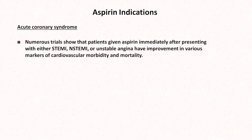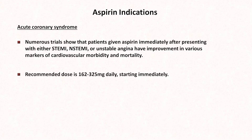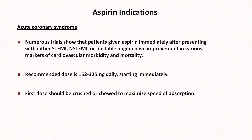So what are aspirin's indications? There are many. The clearest indication is acute coronary syndrome. Numerous trials show that patients given aspirin immediately after presenting with either an ST-elevation MI, non-ST-elevation MI, or unstable angina have improvement in various markers of cardiovascular morbidity and mortality. The recommended dose is 162 to 325 mg daily, starting immediately. The first dose should be crushed or chewed to maximize speed of absorption. In the US, it is common to give 4 chewable 81 mg tablets, believed to be faster absorbed than a single 325 mg tablet.